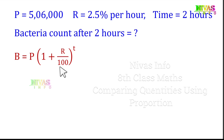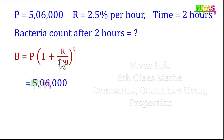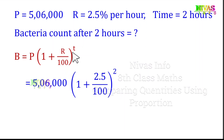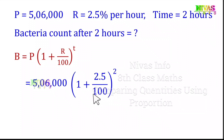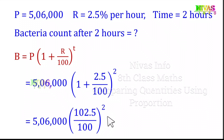The formula is P into 1 plus R by 100, whole power T. So we have 5,60,000 into 1 plus 2.5 by 100, whole power 2. We need to simplify 1 plus 2.5 by 100, which gives 102.5 by 100, or 1.025, whole power 2.